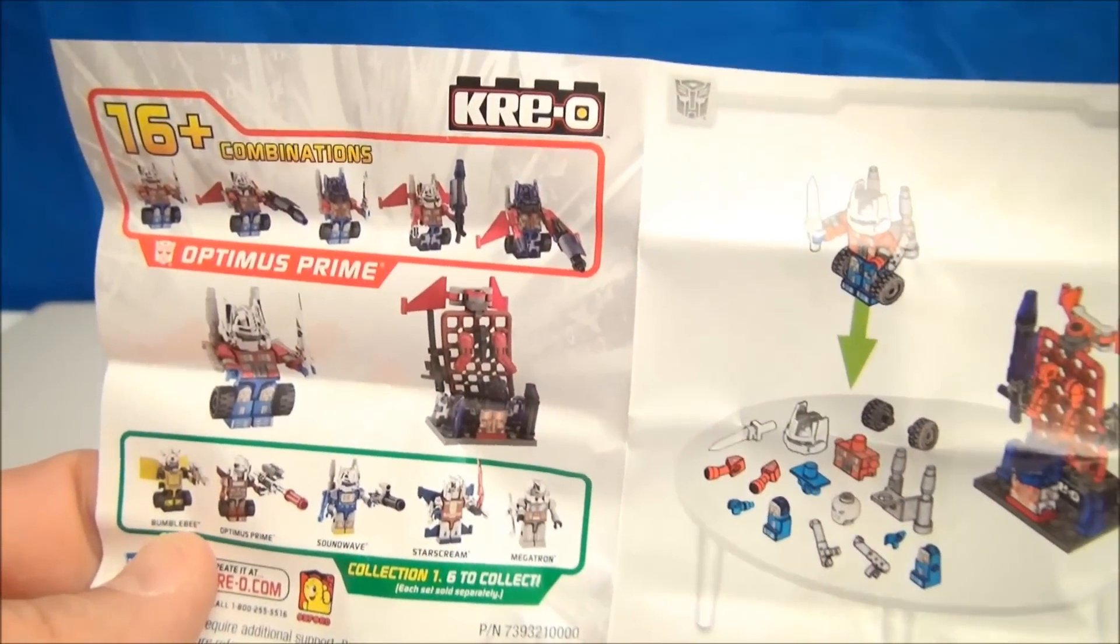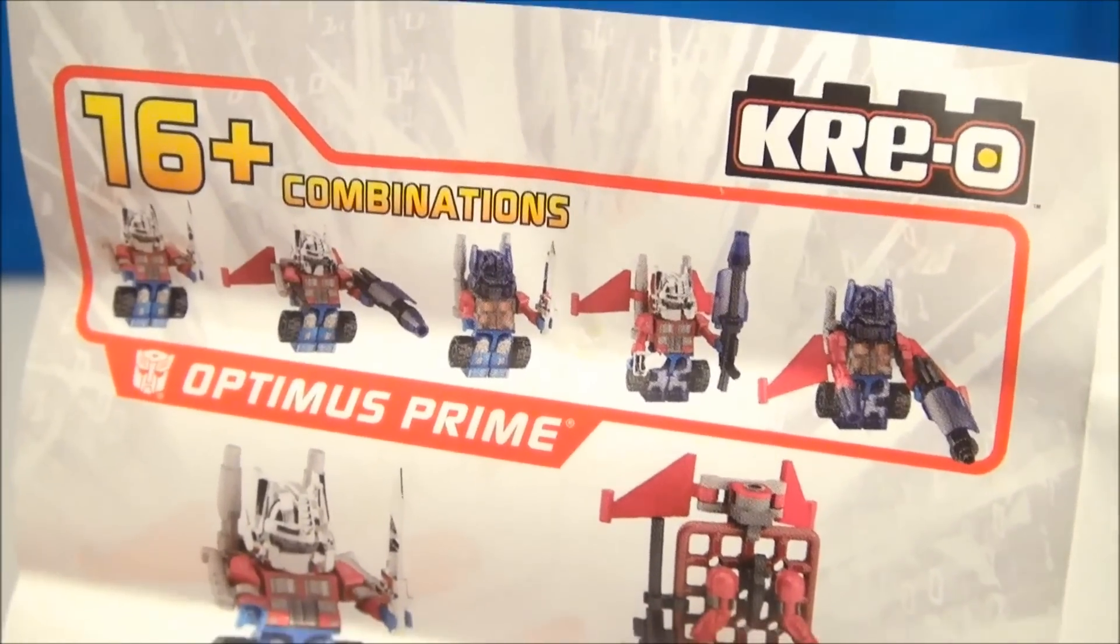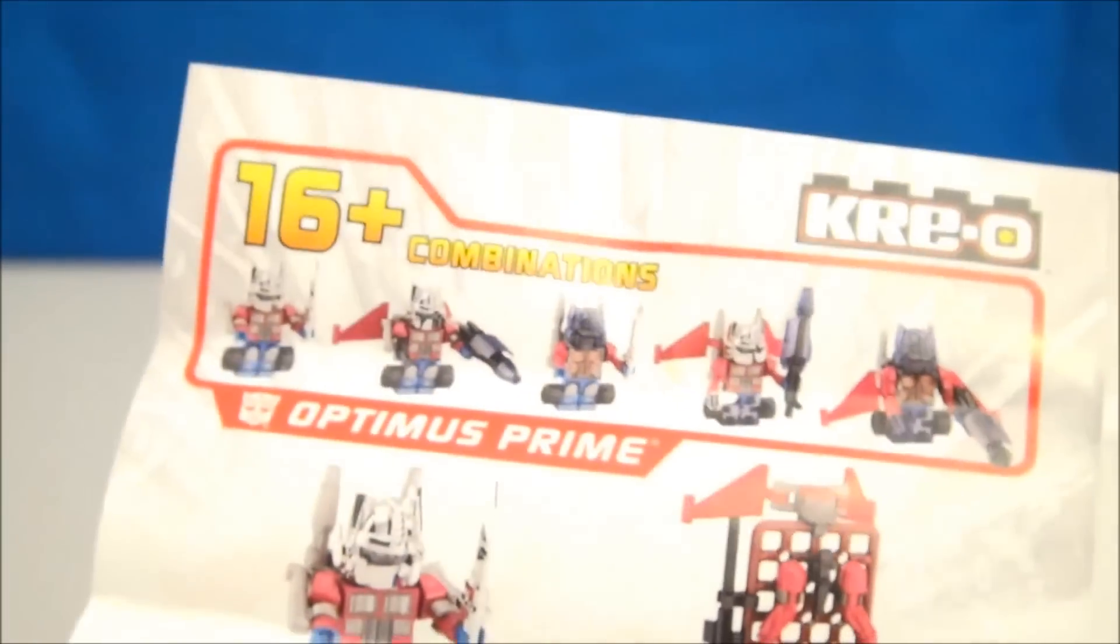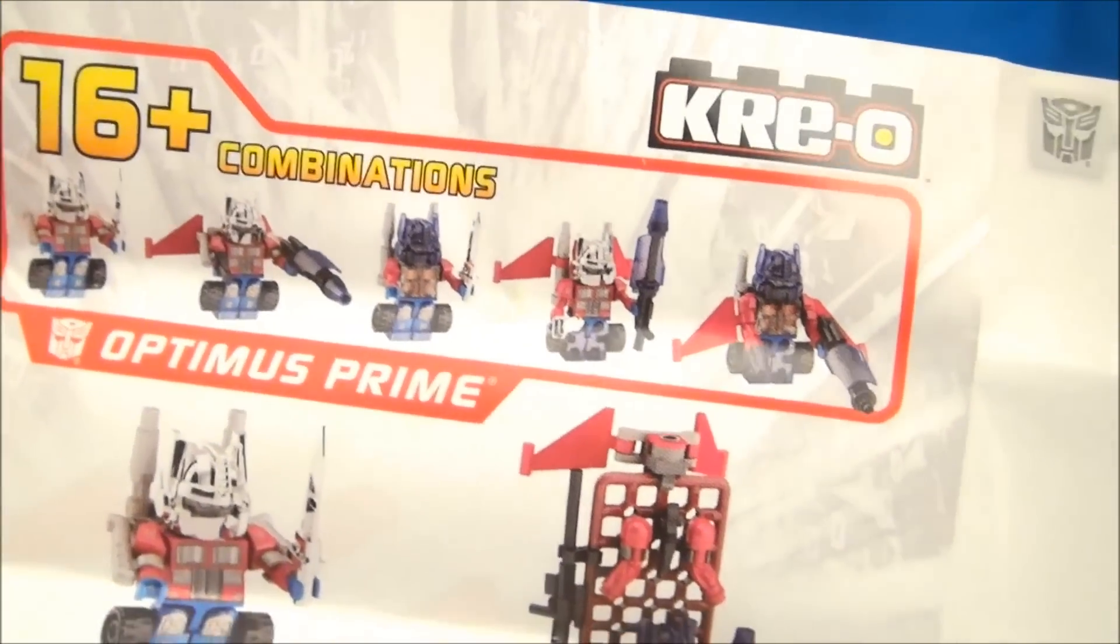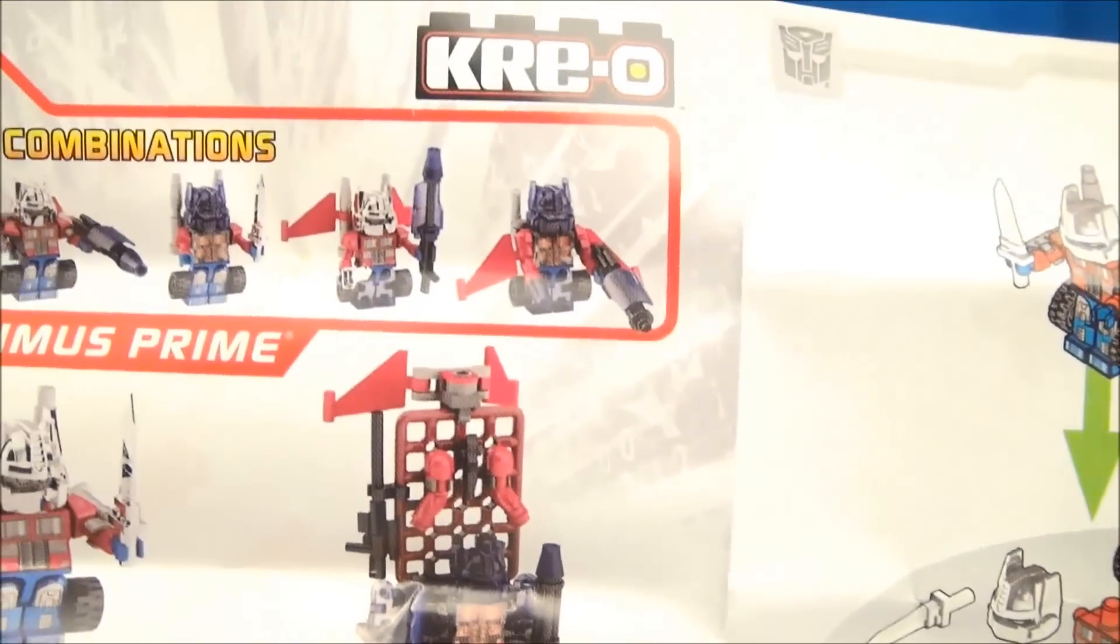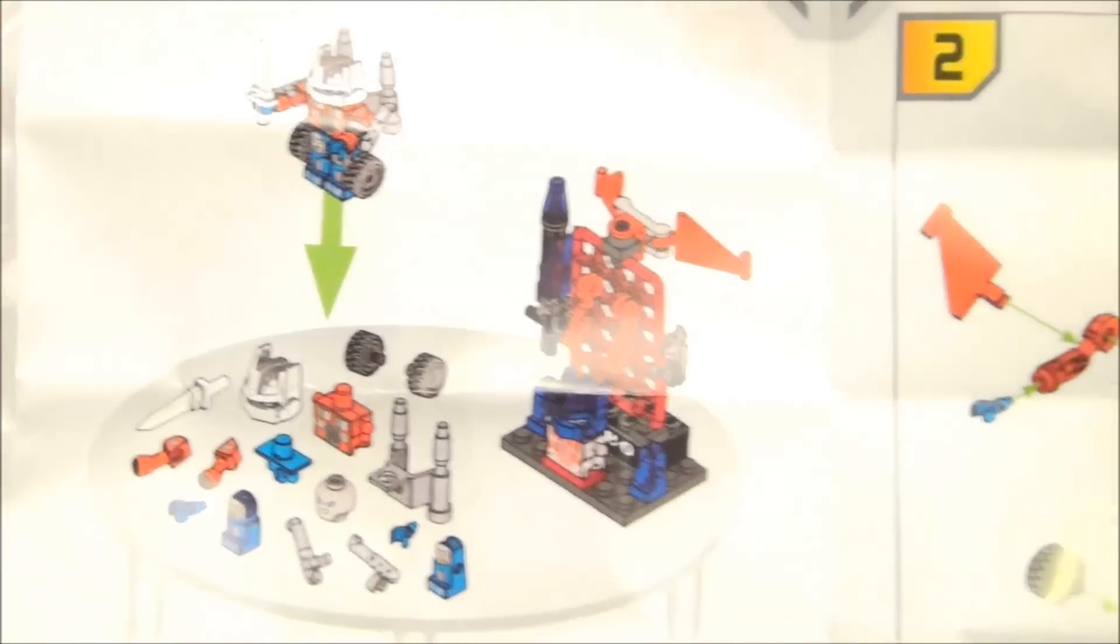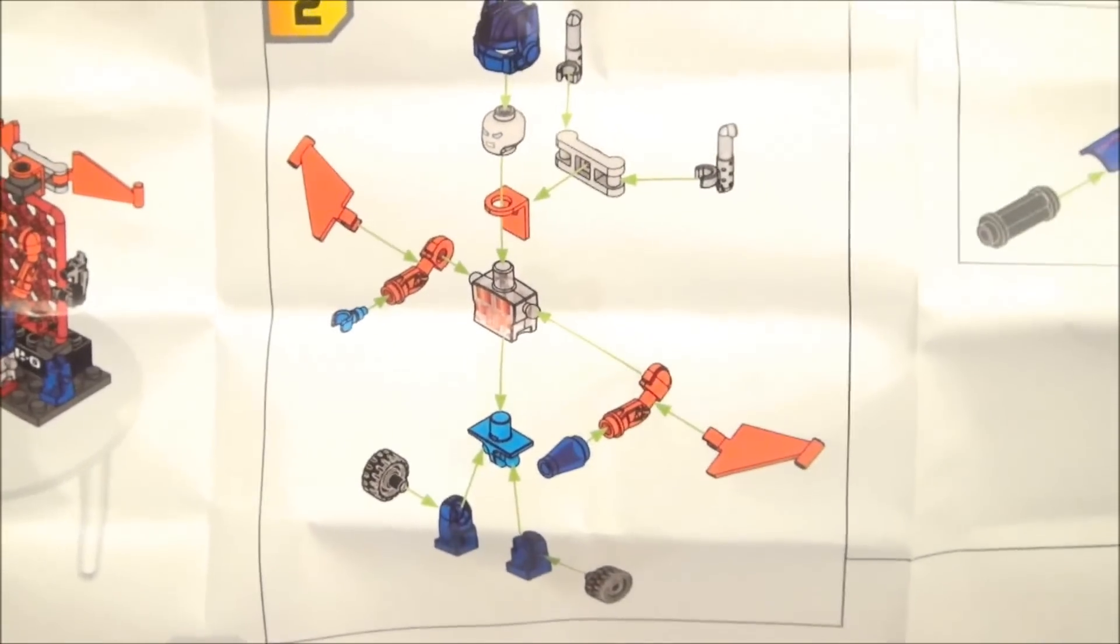Just showing you here Optimus Prime, saying there's 16 different combinations for them. I'm obviously not going to show all those off. He's got a silver chrome helmet, a clear blue helmet. You can make like a Jetwing Prime out of them. You can do all kinds of fun stuff. Use your imagination. Let it run absolutely crazy wild.